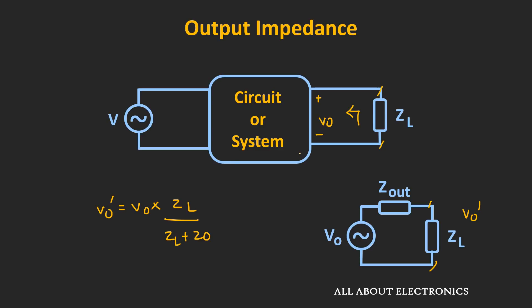Because of this output impedance, the actual voltage which appears across the load will be less than Vo. If this output impedance is comparable to the load impedance, the actual voltage across the load will be less than the output voltage Vout. This is also one kind of loading effect, and it can be minimized by having the output impedance as minimum as possible. By minimizing the output impedance, we can increase the output voltage appearing across the load.